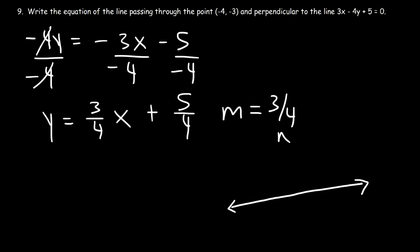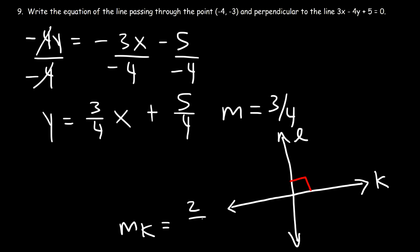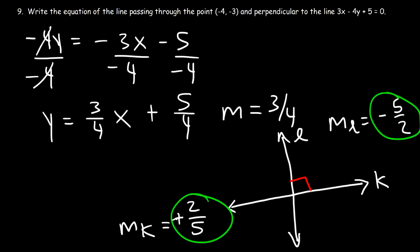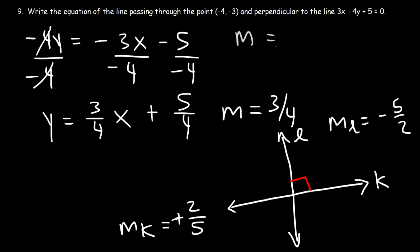Perpendicular lines have slopes that are negative reciprocals of each other. For example, if the slope of line k is 2/5, then the slope of a perpendicular line l is negative 5/2 — you flip the sign and invert the fraction. So since this line has slope 3/4, the perpendicular slope is negative 4/3.